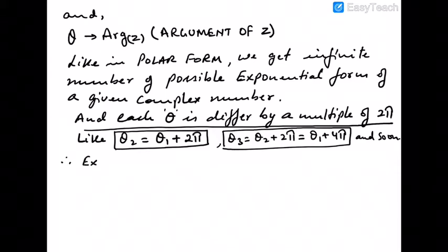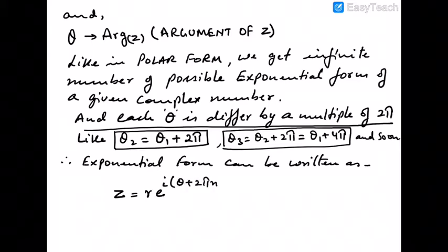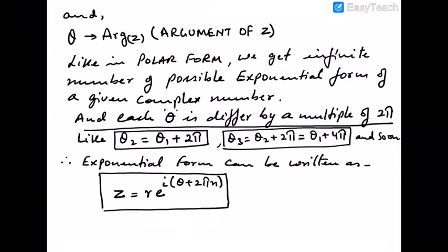Therefore, the exponential form can be written as z = r·e^(i(θ + 2πn)), because each time θ is increasing by a multiple of 2π, for n = 0, ±1, ±2, ±3, and so on.